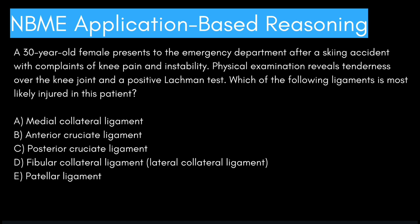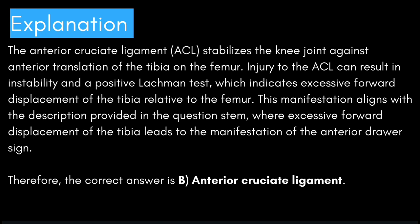All right, I think I gave you guys enough time. Moving on — the anterior cruciate ligament stabilizes the knee joint against anterior translation of the tibia on the femur. Injury to the ACL can result in instability and a positive Lachman test, which indicates excessive forward displacement of the tibia relative to the femur. This manifestation aligns with the description provided in the question stem, where excessive forward displacement of the tibia leads to the manifestation of the anterior drawer sign.